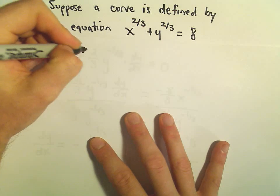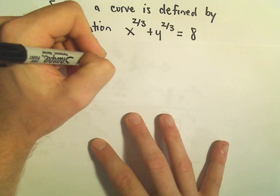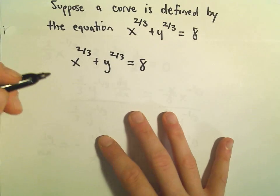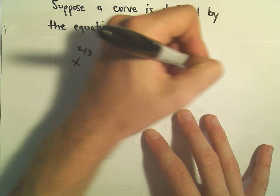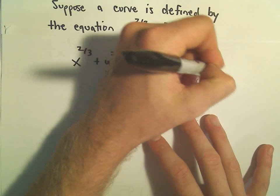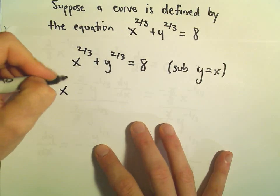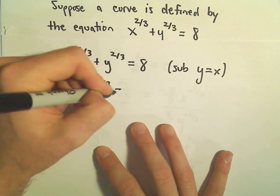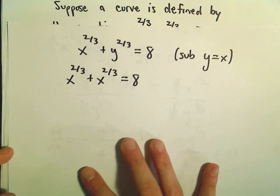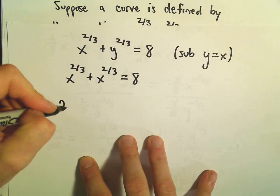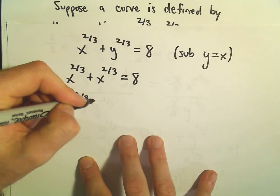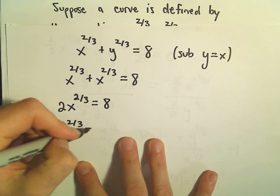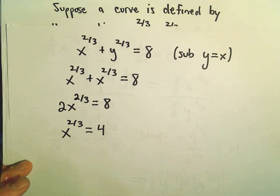We're going to plug in the fact that y equals x into the original equation. So we had x to the two-thirds plus y to the two-thirds equals eight, but substituting y equals x gives us x to the two-thirds plus another x to the two-thirds equals eight. That gives us two x to the two-thirds on the left equals eight. Dividing both sides by two gives us x to the two-thirds equals positive four.